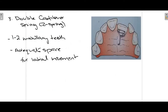The third removable appliance is the double cantilever spring, commonly known as the Z-spring, named for its Z-like shape. It is used for correction of one or two maxillary teeth. One important condition when using the Z-spring is that adequate space must be available so that the palatally placed teeth can move in a buccal direction. As seen in this picture, some space is available, making this appliance suitable.